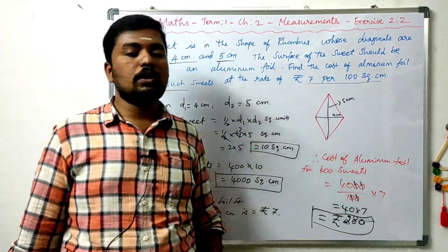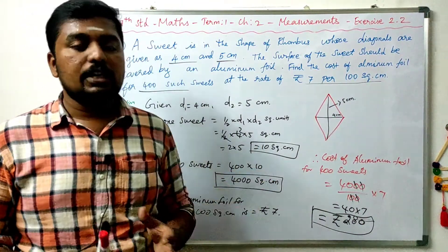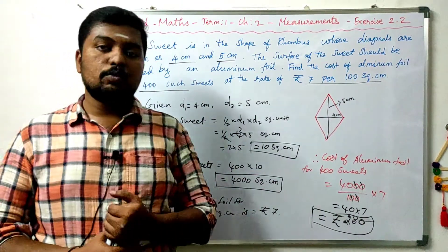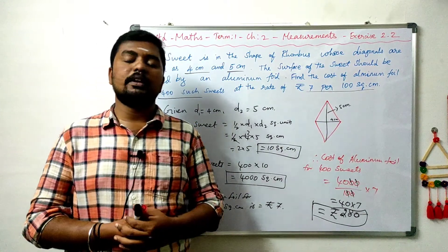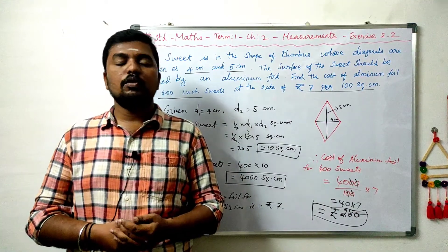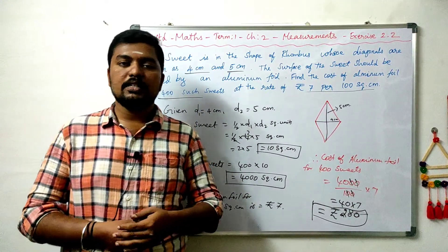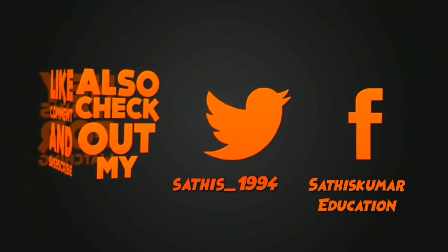The 7th standard maths answer is Rs. 280. That's all for exercise 2.2. If you are watching, please like and subscribe, and share it with your friends. You can comment your doubts below. Thank you. Bye-bye.